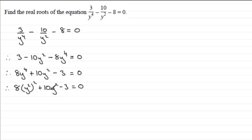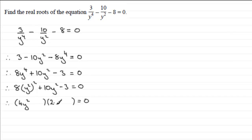To solve this quadratic equation I'll try factorizing. I can split it into two brackets: (4y squared minus 1)(2y squared plus 3) equals 0. Expanding: 8y to the power 4, plus 12y squared minus 2y squared — that's the 10y squared — and minus 1 times 3 is minus 3.